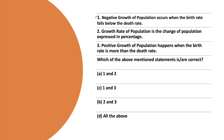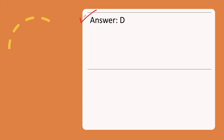The next question: Statement 1: Negative growth of population occurs when the birth rate falls below the death rate. Statement 2: Growth rate of population is the change of population expressed in percentage. Statement 3: Positive growth of population happens when the birth rate is more than the death rate. Which of the above statements is correct? Take a moment and answer. The correct answer is option D.